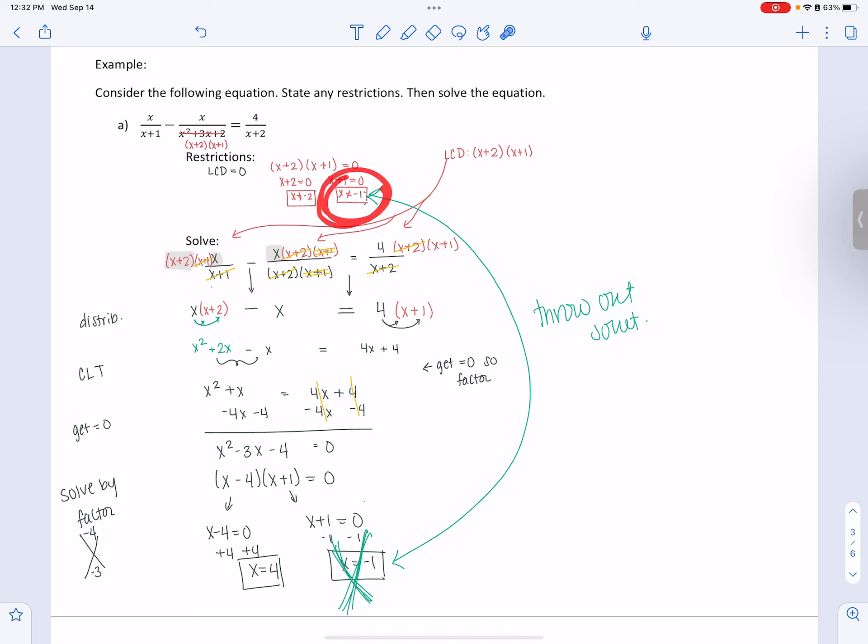Now, because there was a restriction of x equals negative 1 and a solution of x equals negative 1, I did disregard, I crossed off, I got rid of that solution. And so the only answer that you would type into HAWKS is going to be that one of x equals 4.